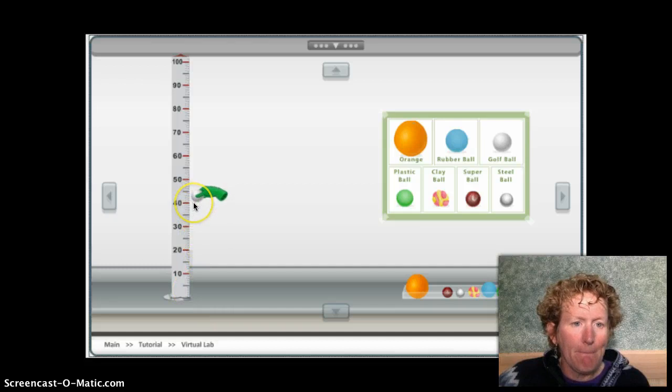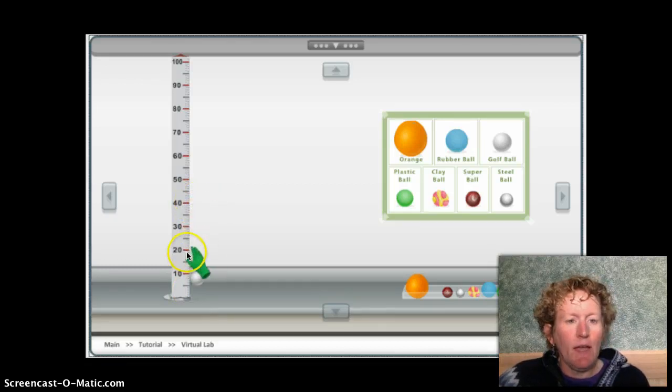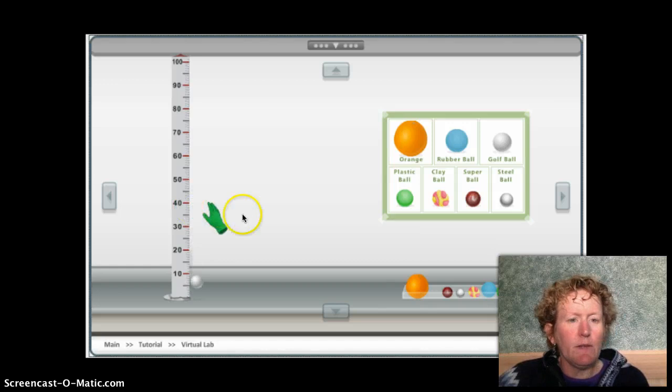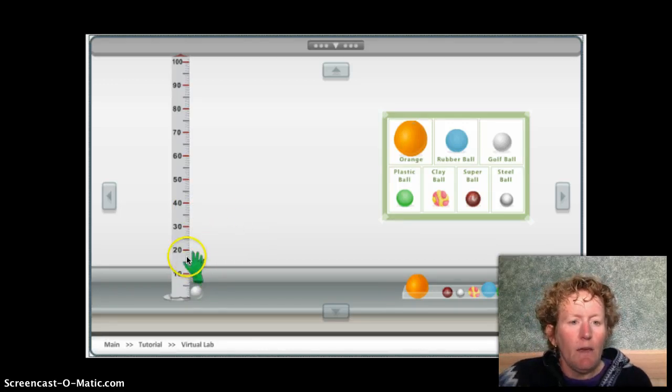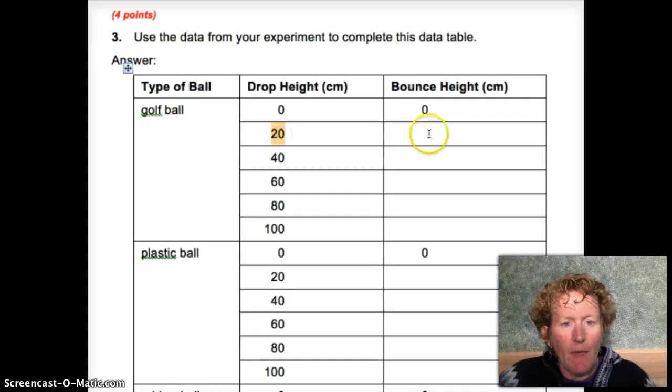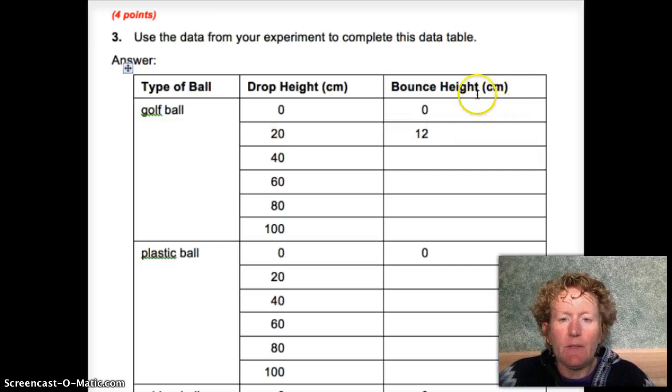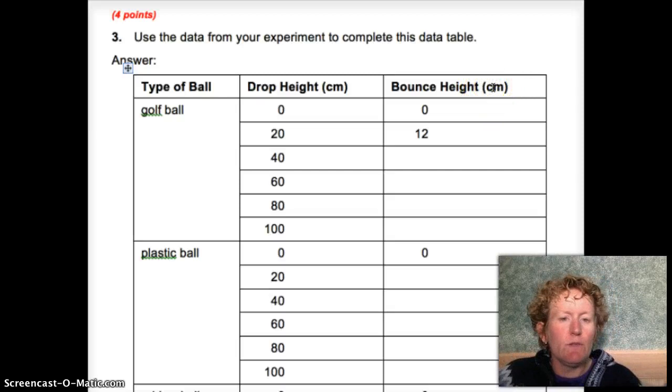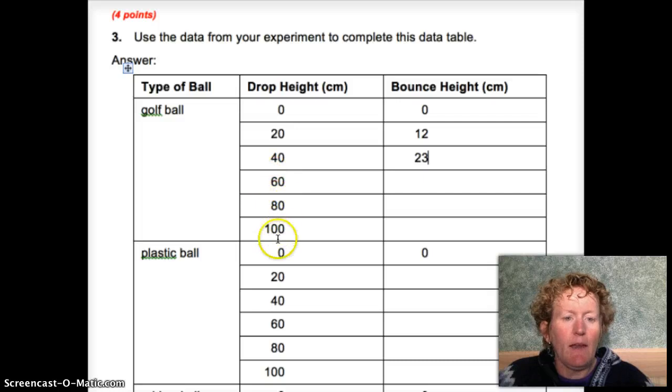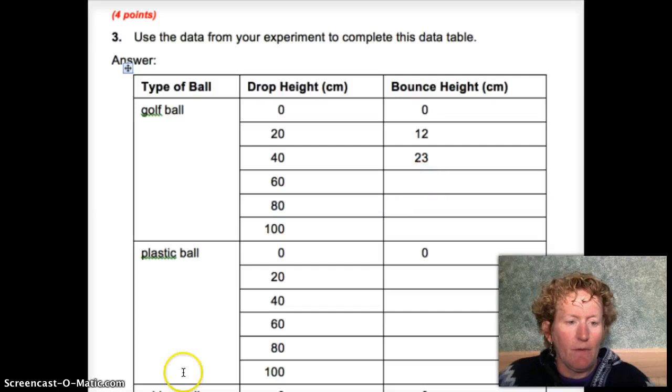I'm going to try 40 here. So it looks like I'd keep an eye on right around here at 20. Remember, my drop height is 40 and my bounce height is going to be right around in here. It looks like about 23 to me. When we go back to the lab sheet, for a drop height of 20 here, we had a bounce height of 12 centimeters. And centimeters is the unit. When we dropped it from 40 centimeters, it was 23. Now we need to go drop it from 60, 80, and 100 centimeters and get those bounce heights before we can make a graph.